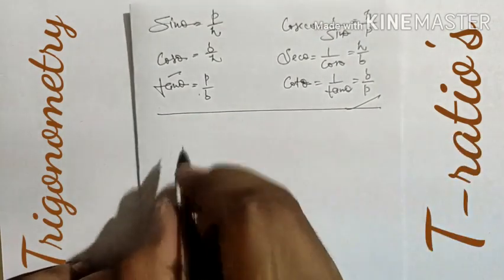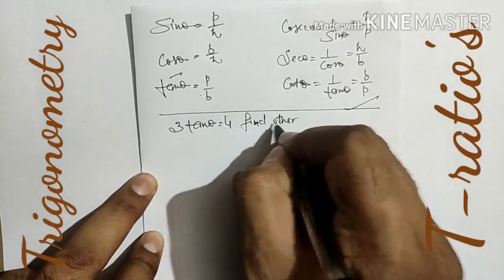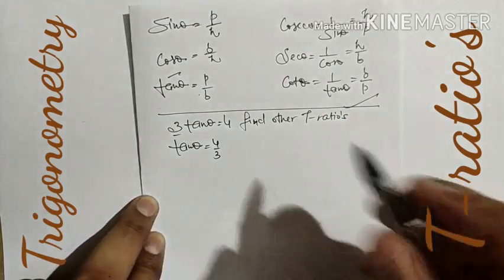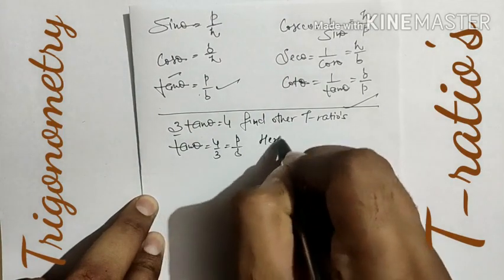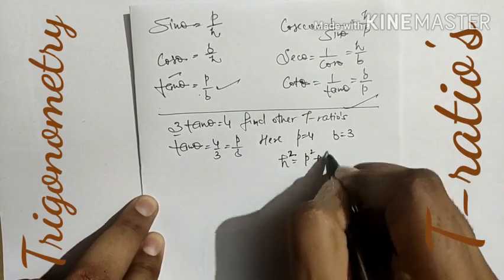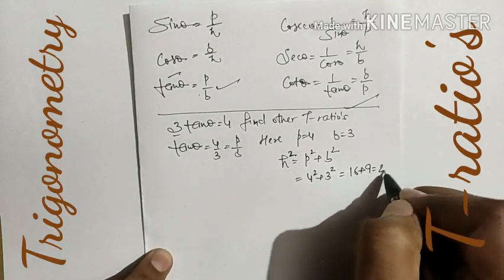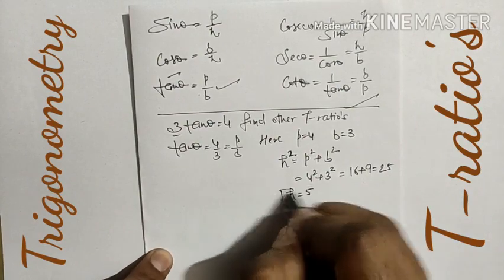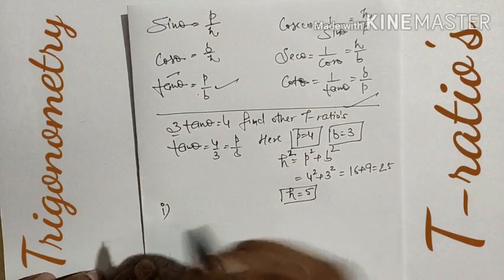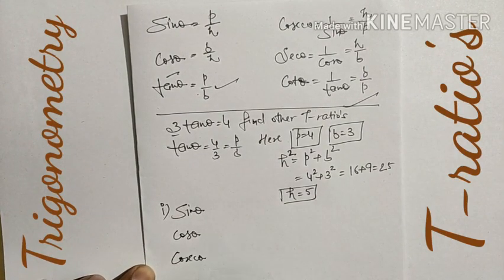Now, how do we use this to solve questions? For example, if tan θ = 4/3, find the other T-ratios. From the formula tan θ = P/B, the value of perpendicular becomes 4 and base becomes 3. By Pythagoras theorem: H² = P² + B² = 4² + 3² = 16 + 9 = 25, so H = 5 units. First aim is to find all three sides.